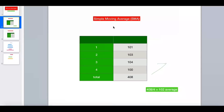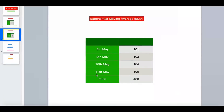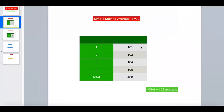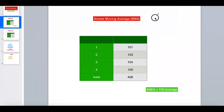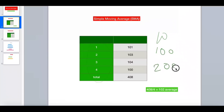Let's take an example of a simple moving average. I've taken an example of number of days — let's say 11th May, 10th, 9th, 8th. The stock prices are 101, 103, 104, and 100 rupees. The total is 408, and we divide by the number of days — 1, 2, 3, 4 — so divided by 4 gives us 102 as our average. This is the simple moving average. Like in cricket, Virat Kohli has a batting average of say 60 runs, meaning almost every match he hits 60 on average. Similarly, simple moving average is a simple calculation divided by number of periods — it can be 4, 10, 100, or 200.